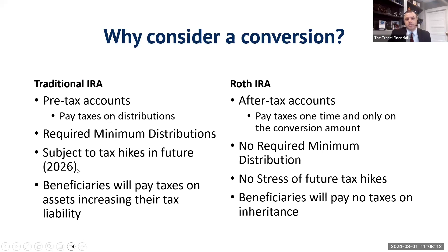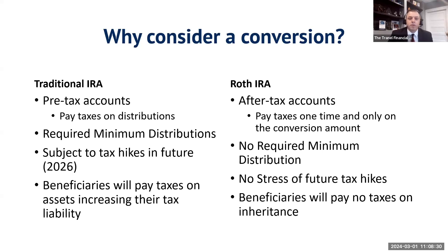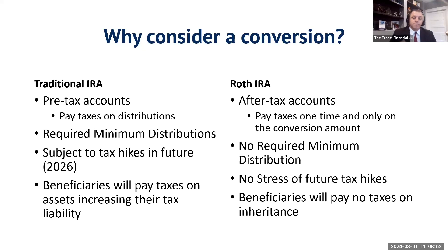Right now, if nothing changes with our current tax code, the marginal tax rates are going to go up by about three percentage points — you'll pay about 3% more in taxes on all your dollars. So every $100 you make, you're going to pay $3 more in taxes if that tax ruling does sunset. The 22% bracket will go to 25%, the 12% will go to 15%, and so forth.